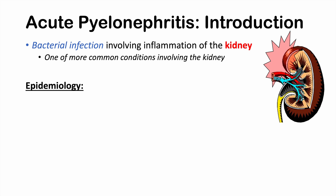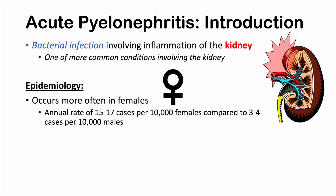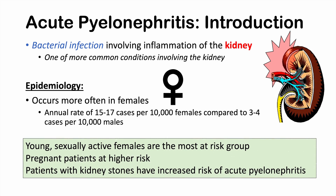What is the epidemiology of this condition? It occurs more often in females — 15 to 17 cases per 10,000 per year, compared to 3 to 4 cases per 10,000 in males. The groups most at risk include young sexually active females, who are the most at-risk group, pregnant patients, and patients with kidney stones.